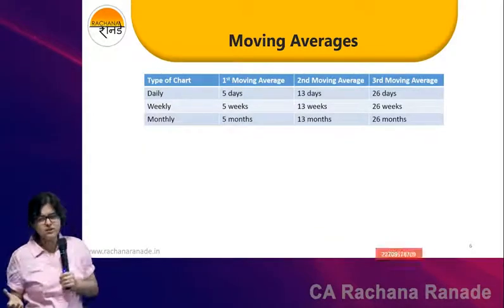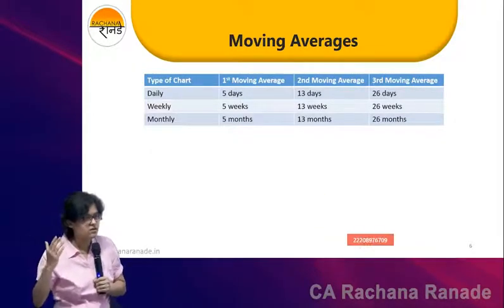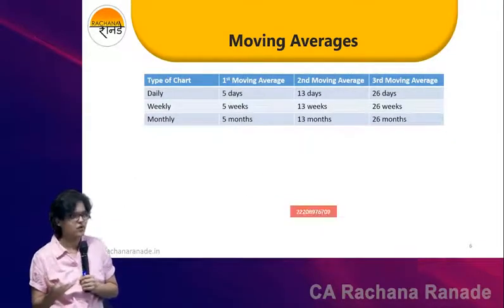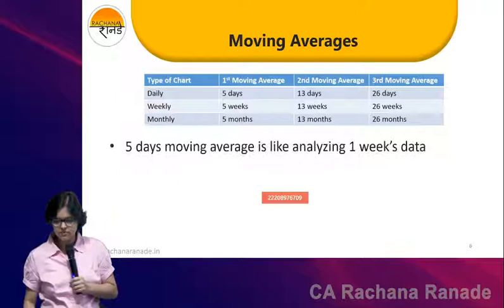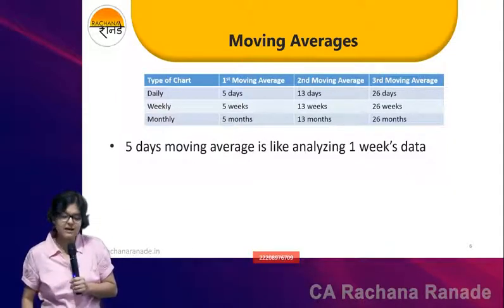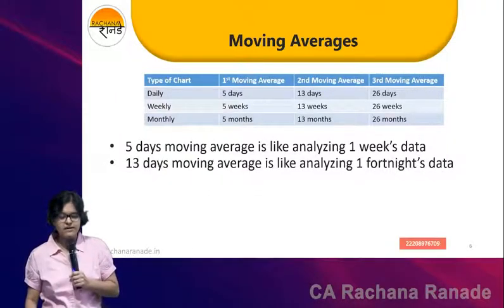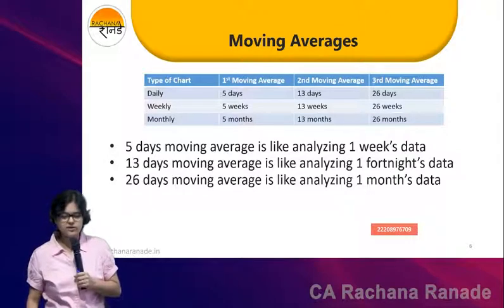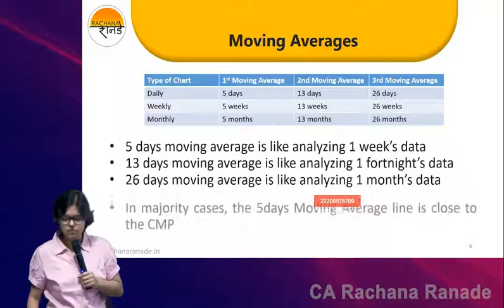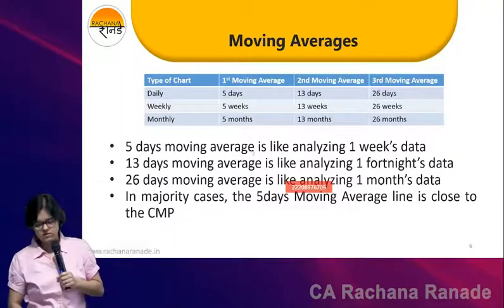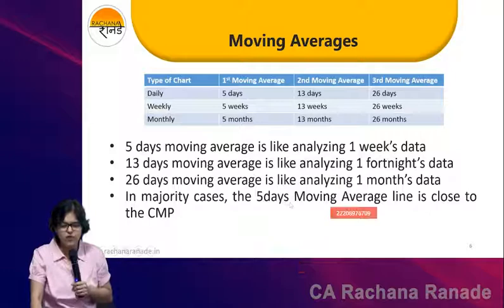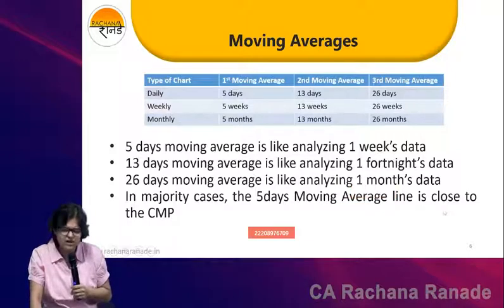So why am I clearing all these things? When I start taking charts, I'm not going to tell all these things again — we are building the basics right now. So: 5 days moving average is like analyzing one week's data, 13 days is one fortnight's data, and 26 days is almost one month's data. In majority of the cases, the 5 days moving average line is very close to the current market price.